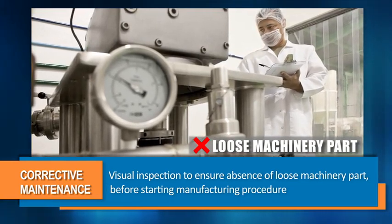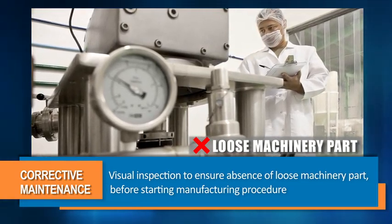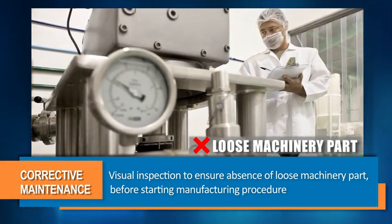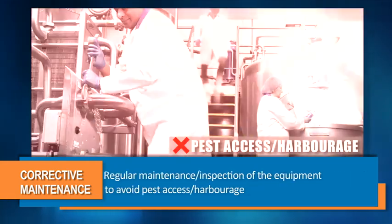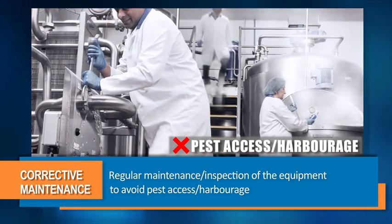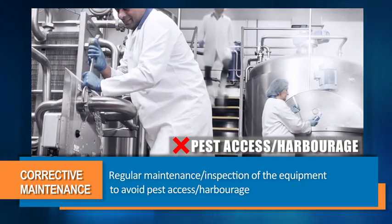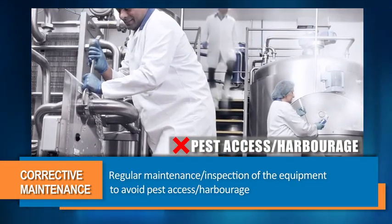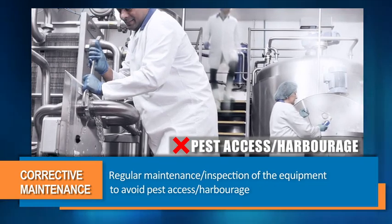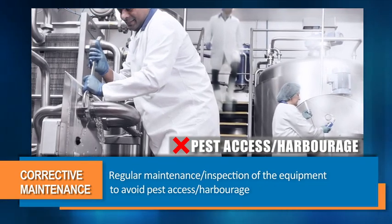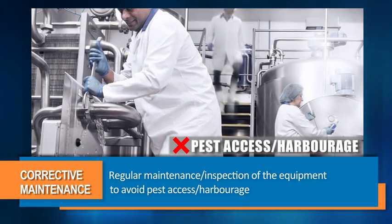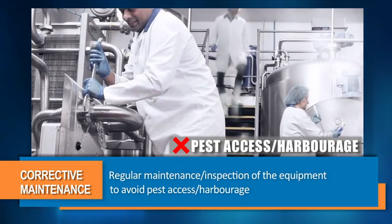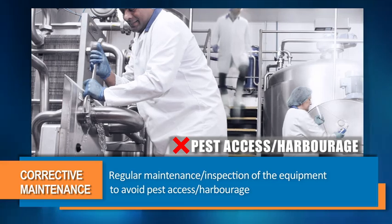Visual inspection should be done to ensure the absence of any loose machinery parts before starting the manufacturing procedure. Regular maintenance and inspection of the equipment shall be done to ensure they do not provide pest access or harbourage.